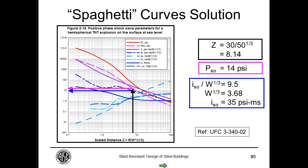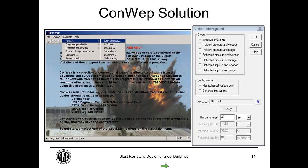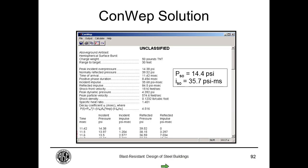ConWEP lets you plug in the numbers directly: select hemispherical surface burst, input charge size and range. For 50 pounds at 30 feet, ConWEP outputs a peak incident pressure of 14.38 psi, a normally reflected pressure of 39.52 psi, and an incident impulse of 35.68 psi-milliseconds. The values from ConWEP compare very well to those read directly from the spaghetti curves, confirming that ConWEP is simply those calculation procedures implemented in a computer program.